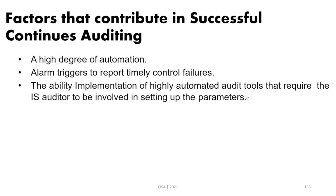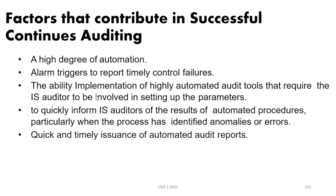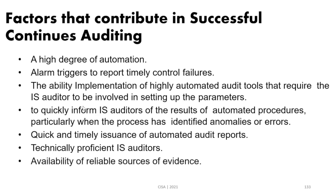The IS auditor must be able to engage with the software and modify parameters to eliminate false positives and accept only true alarms. How quickly the continuous auditing tool can report an identified anomaly or error matters, as does the speed of audit report issuance. Technical proficiency of the IS auditor is very important, as is the availability of reliable sources of evidence exportable from these systems, and adherence to materiality guidelines — auditing what really needs to be audited.